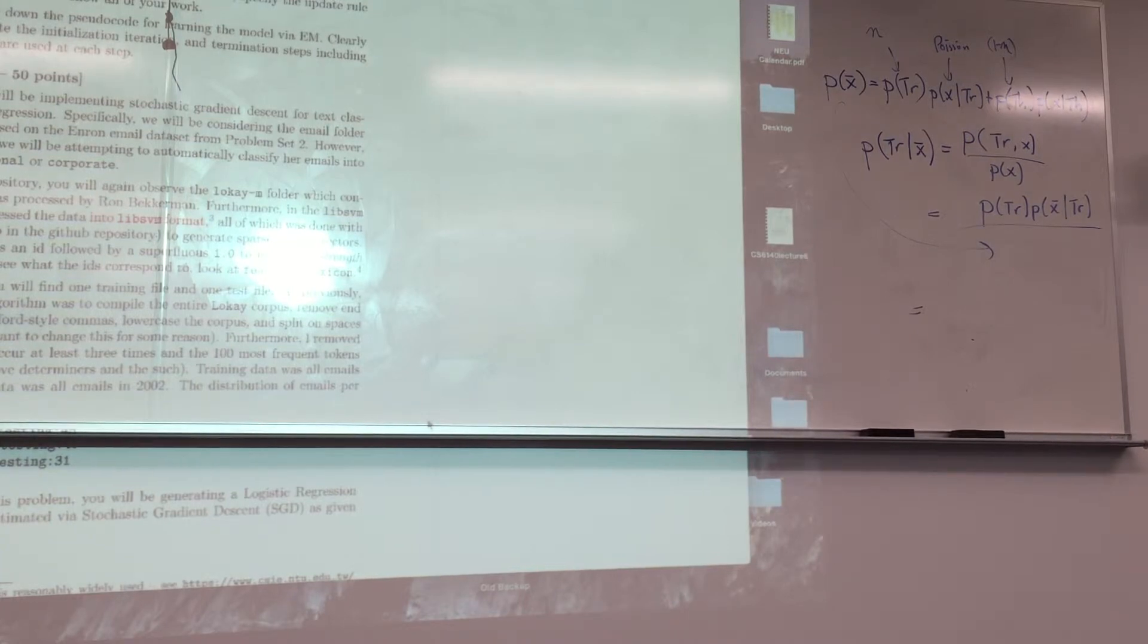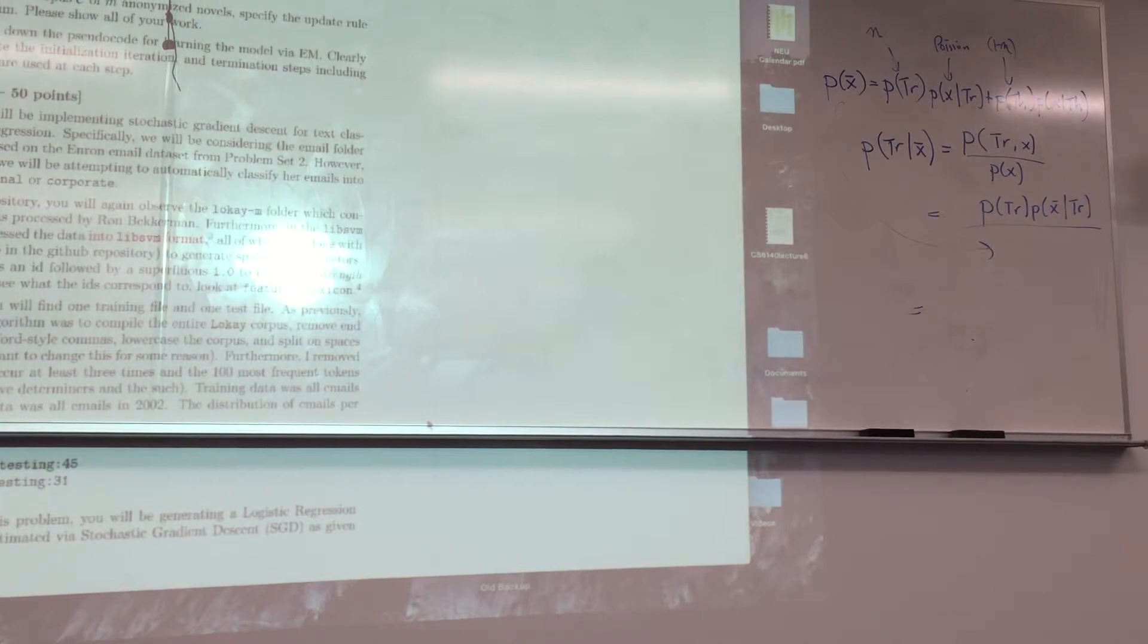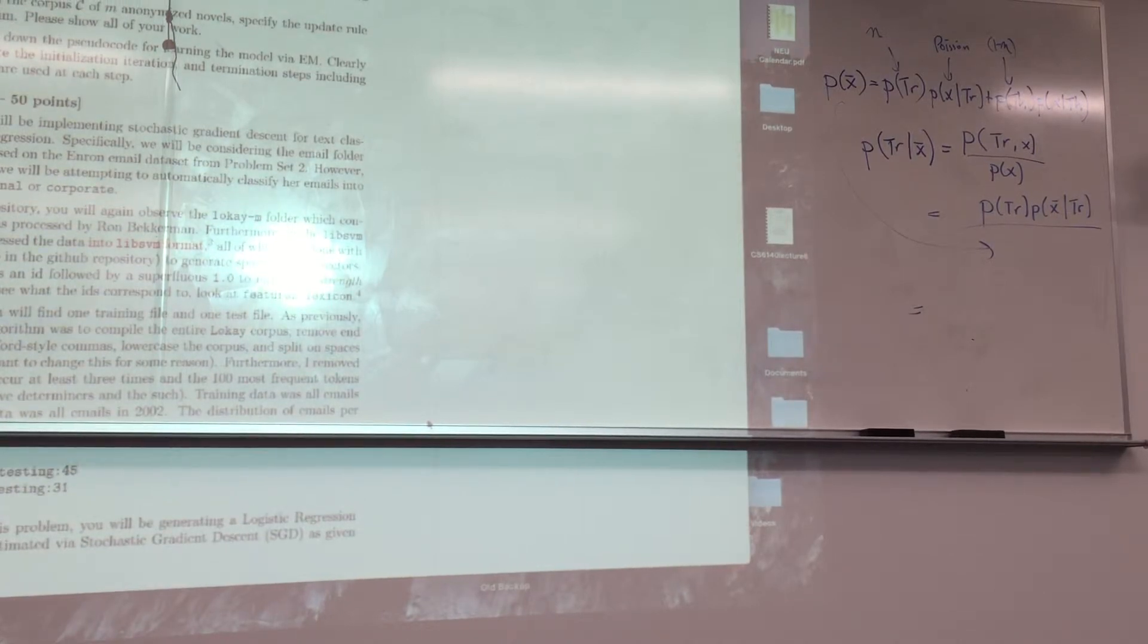And those are the easy parts of the problem because these are really just estimation cases, right? So given this corpus of anonymized novels, specify the update rule of the M algorithm. So this is harder, obviously.